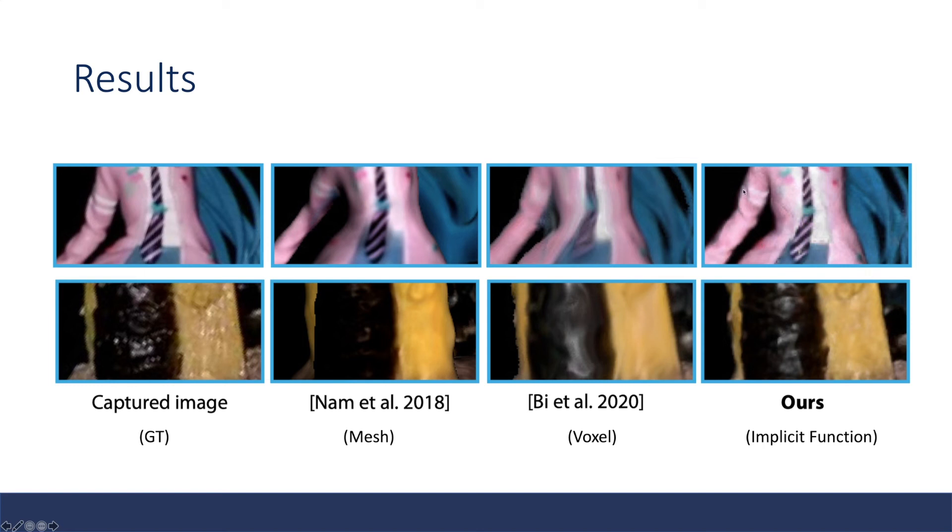Using implicit function, it can capture more high resolution details and can more faithfully reconstruct this specular highlight. So indicating that it is capturing better material properties and finer details.